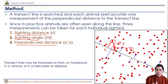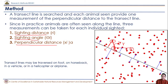When we have the perpendicular distance, the hypotenuse (the longer side of the right triangle), and the angle, we can use the properties of a right-angled triangle. Specifically, sin(theta) equals perpendicular divided by hypotenuse. So when we know the sighting distance and the sighting angle, we can calculate the perpendicular distance from the animal to the transect.